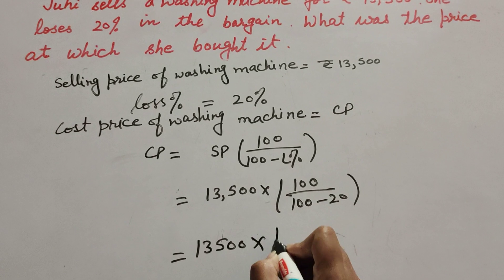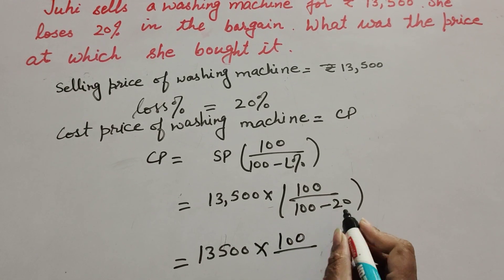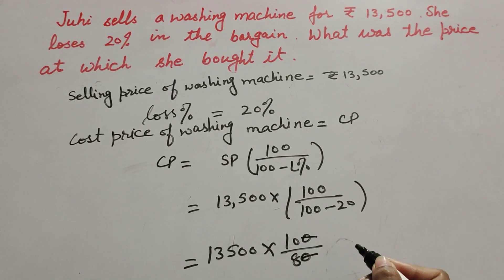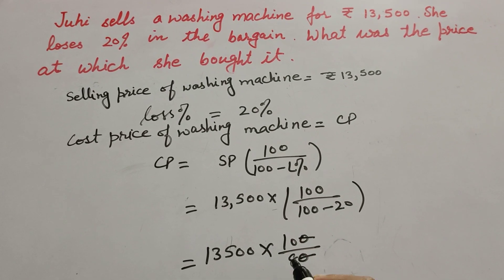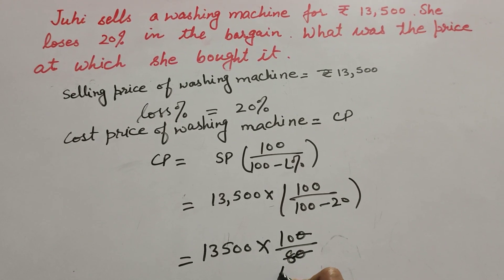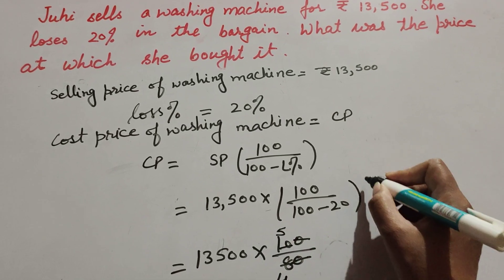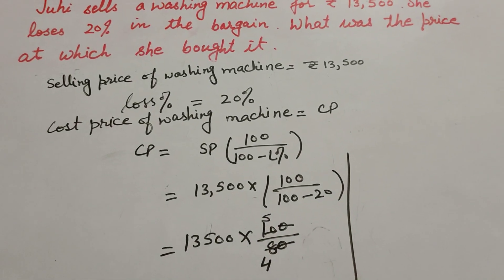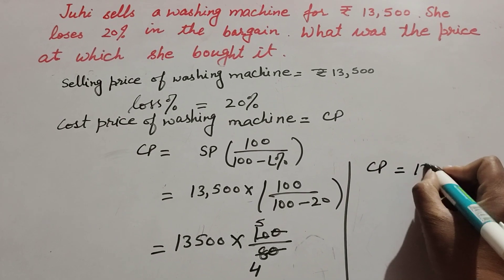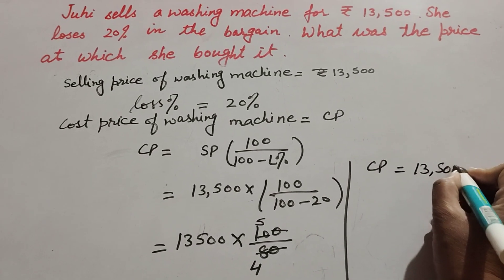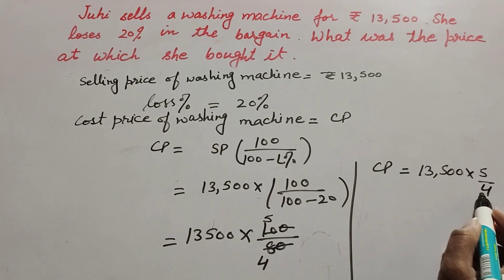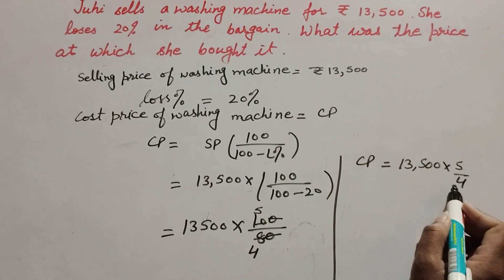100 minus 20 is equal to 80. Now the zeros in the denominator and numerator are cancelled. 10 and 8 are both divisible by 2, so we cancel them — two fours are eight, two fives are ten. So the cost price becomes 13,500 multiplied by 5 over 4.